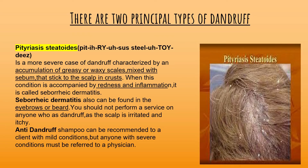The two types of dandruff are pityriasis steatoides and pityriasis capitis simplex. Pityriasis steatoides is the more severe case of dandruff, characterized by accumulation of greasy or waxy scales mixed with sebum that stick to the scalp and form crusts. When this condition is accompanied by redness and inflammation, it is called seborrheic dermatitis. Seborrheic dermatitis can also be found in the eyebrows and beard.